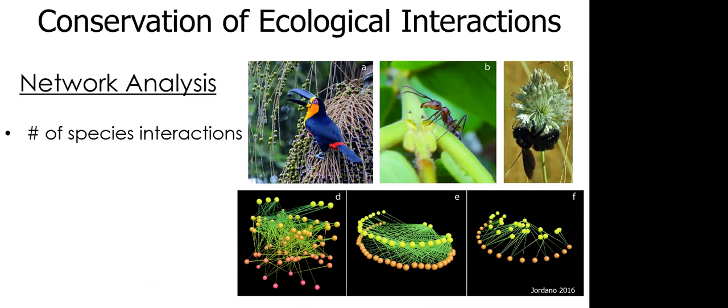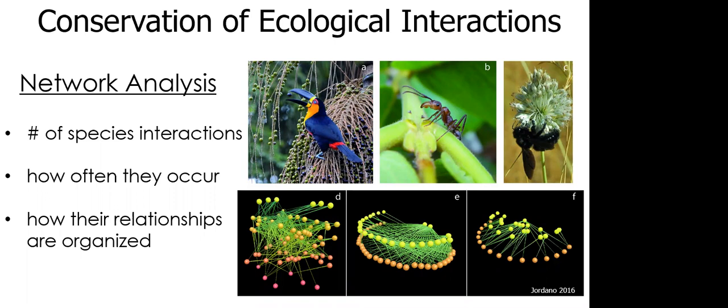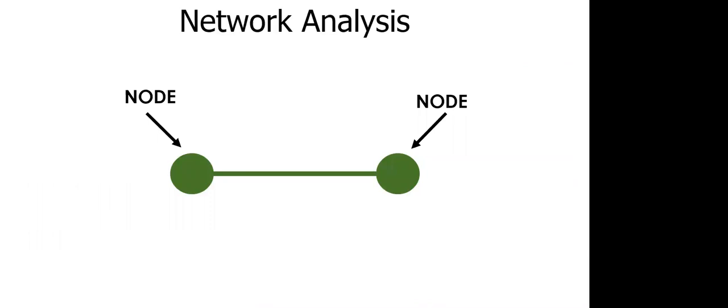So a network approach can tell us the number of species interactions, how often they occur, and how those relationships are organized. To break things down a little, especially for our new graduate cohort and provide a snapshot of just one slice of the community ecology course here at EKU, I'm going to review the components that comprise a network and desirable features.